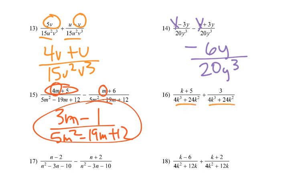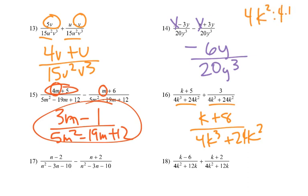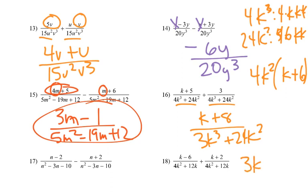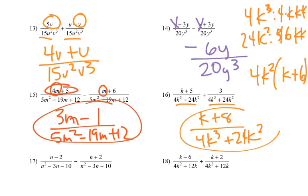Number 16, same denominator. k plus 5 plus 3 gives us k plus 8, which is 4k cubed plus 24k squared. That's like 4 times k times k times k, and 24k squared is 4 times 6 times k squared. So I could pull out a 4 and k squared and be left with k plus 6. We were hoping it might be k plus 8 so things would cancel, but it's actually k plus 6, so it doesn't help. There's our answer.